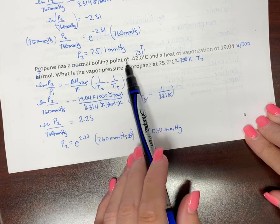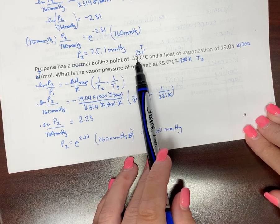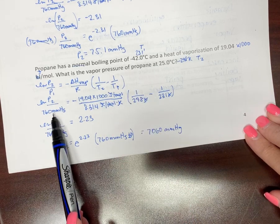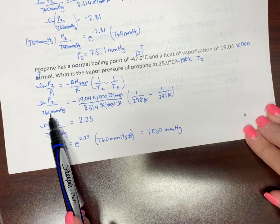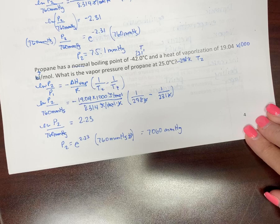So here, propane boils really low. That's where vapor pressure equals atmospheric pressure. There. So if it's already that high at this low temperature, at room temperature, much higher pressure.